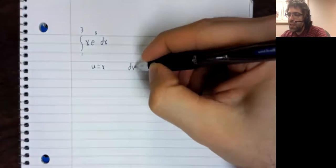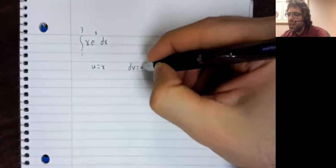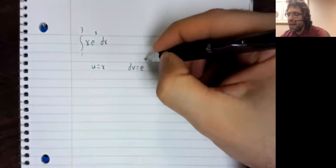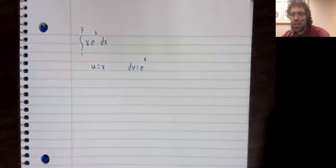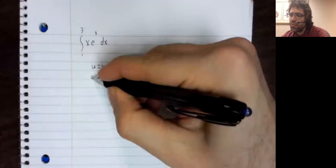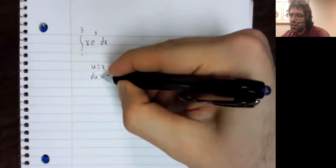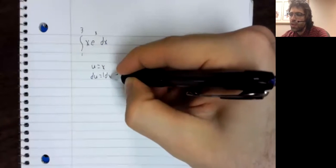So we can try letting u be x and dv e to the x. du is 1 dx, and v is e to the x.